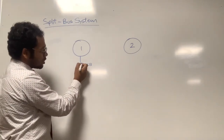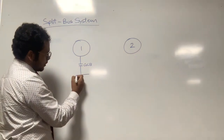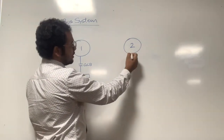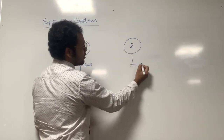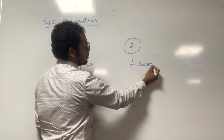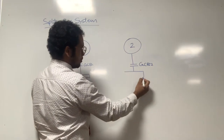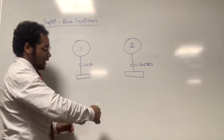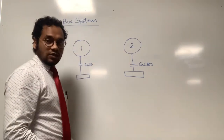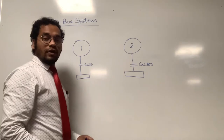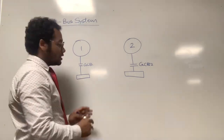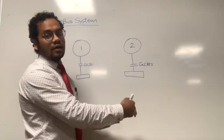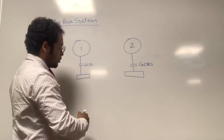When the GCB closes, it gives supply to a bus bar. Likewise, generator 2, when running, by means of generator circuit breaker number 2 will give supply to its own side bus bar. The left side and the right side have their own bus bars, and these bus bars provide supply to their own loads. Both sides are segregated — in normal operation, the left side system has its own bus bar supplying its loads, and likewise the right side system has its own bus bar supplying its own loads.